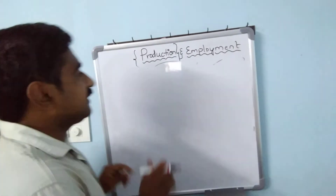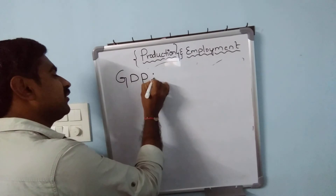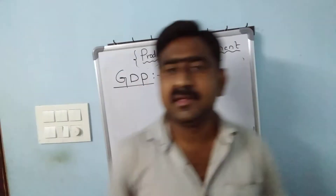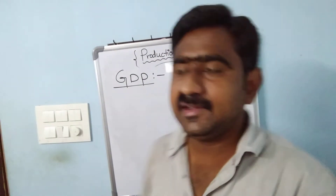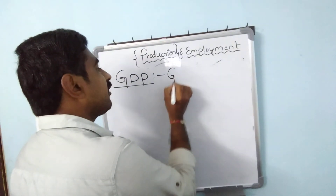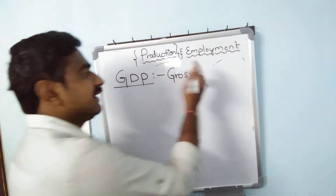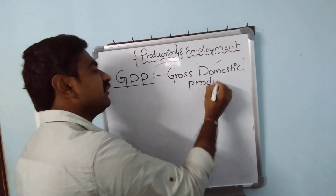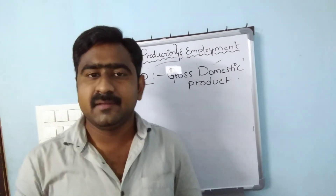The next very important concept is GDP. GDP stands for Gross Domestic Product. G stands for Gross, D stands for Domestic, and P stands for Product. So GDP means Gross Domestic Product — a very important definition.